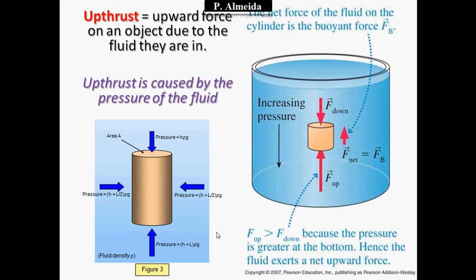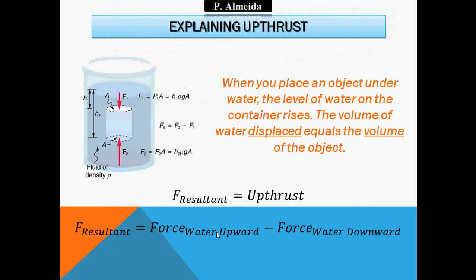Although in fluids the pressure is always bigger at the bottom than at the top of the object, what can happen is that sometimes the weight of the object may have an effect and the object may still sink, even though there is higher pressure on the bottom. Think about it: when you place an object under water or any fluid, the level of the water in the container rises. The volume of the water that is displaced is equal to the volume of the object.